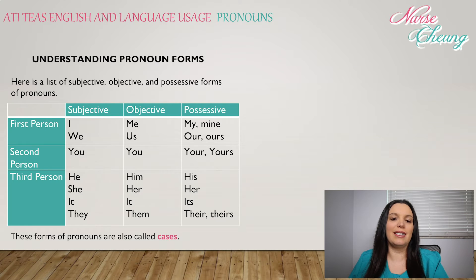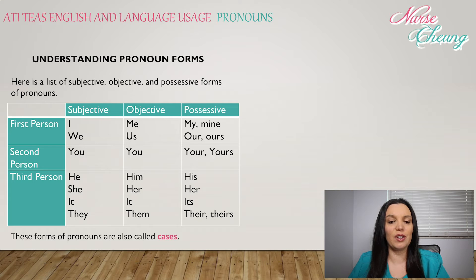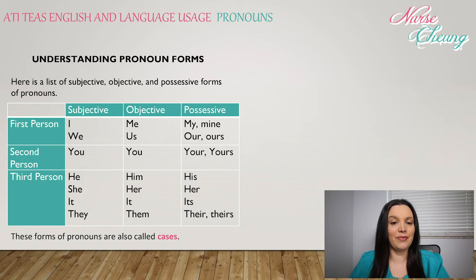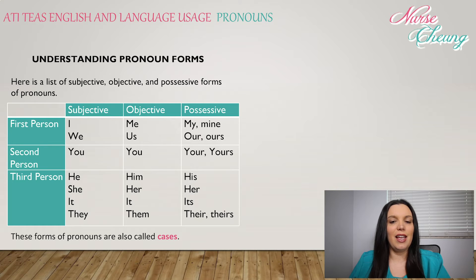I've included a list of subjective, objective, and possessive forms of pronouns for your review. First person subjective pronouns: I, we. First person objective pronouns: me, us. And first person possessive pronouns: my, mine, our, and ours.